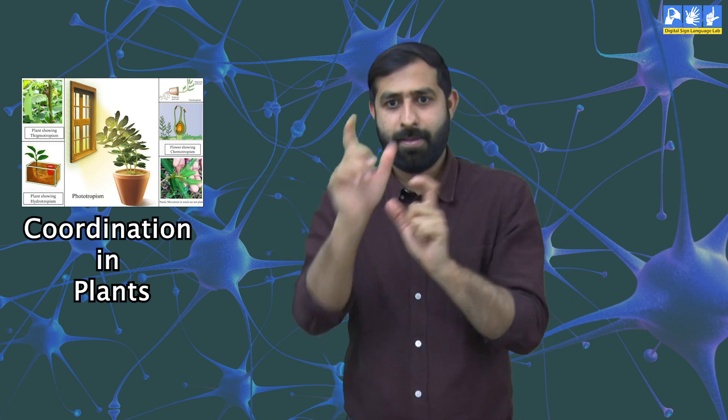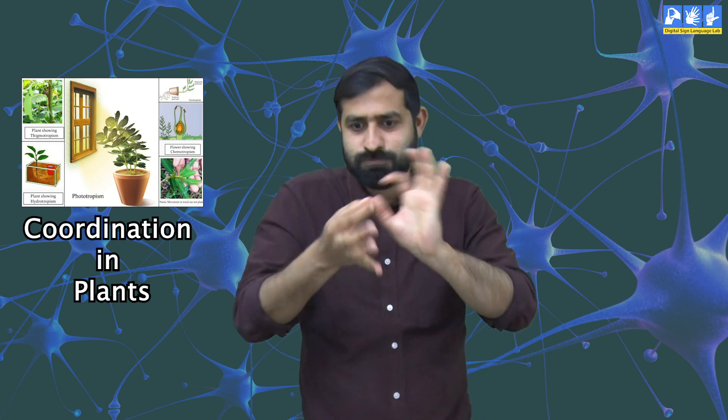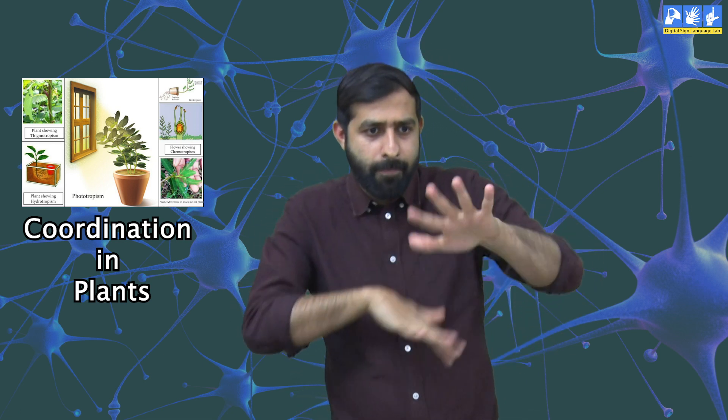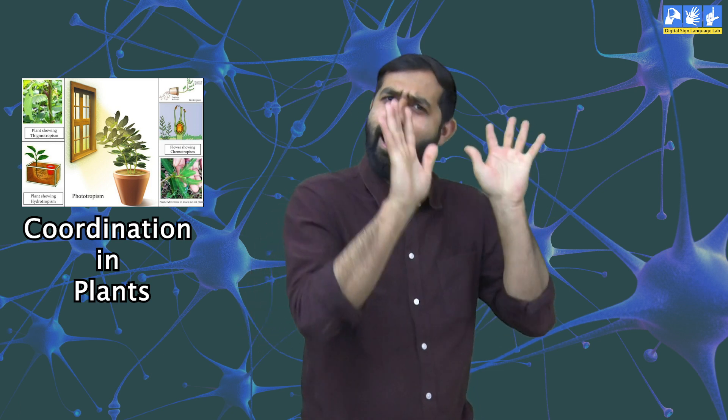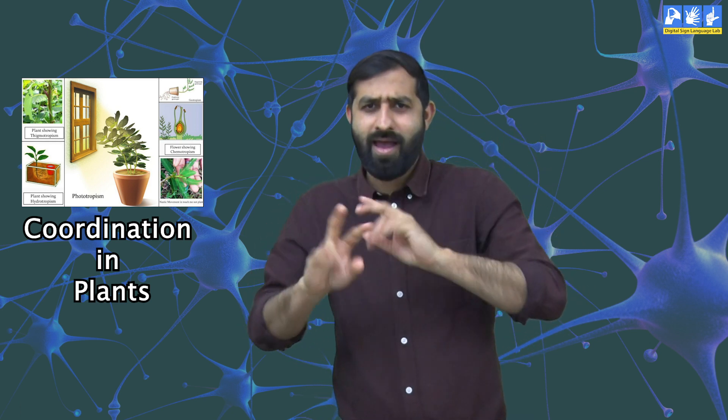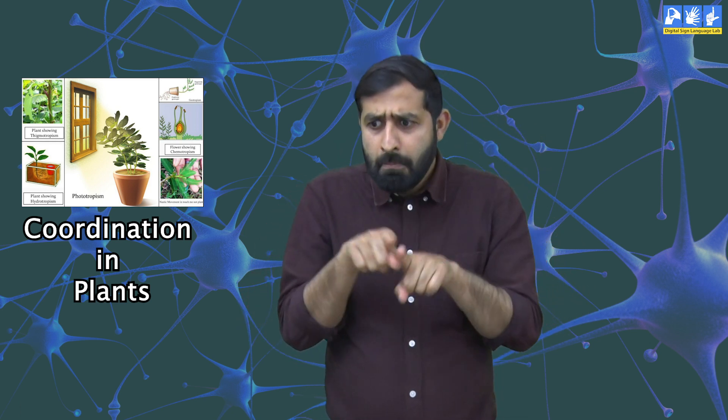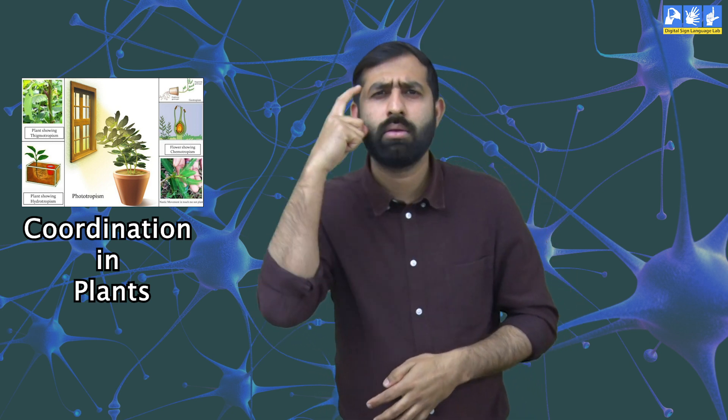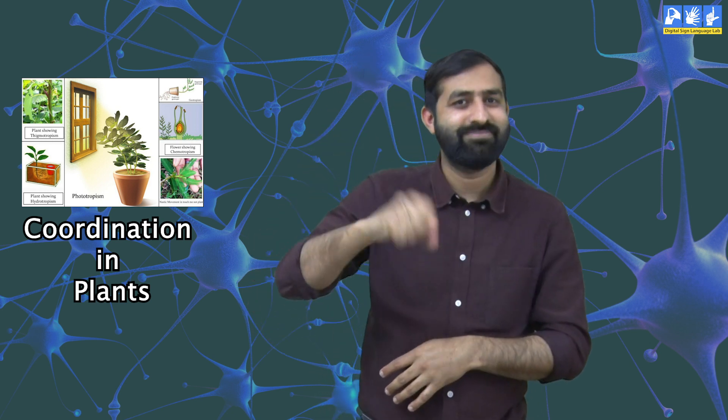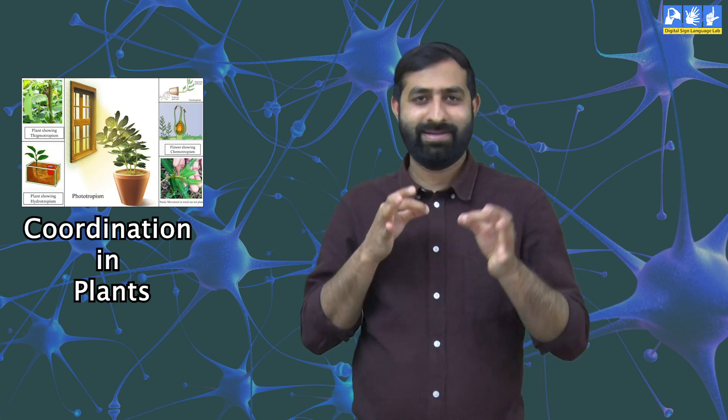As we have already discussed, coordination in animals and human body is done by the nervous system. In animals, such control and coordination are provided by nervous and muscular tissues. Does control and coordination also take place in plants? Yes, control and coordination also takes place in plants.